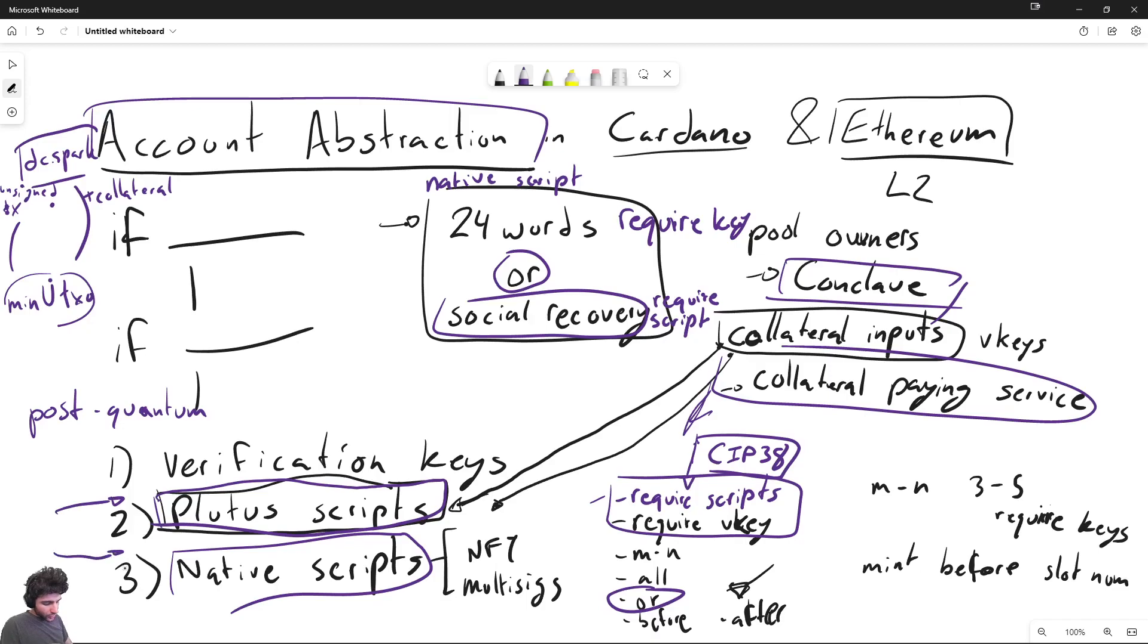Now you could add these to Plutus, but you could also say that we could add these to native scripts. And so that's also an interesting discussion because then you could have in the future possibly like require V-keys, require scripts, or like require post-quantum cryptography or other kinds of key schemes inside native scripts.